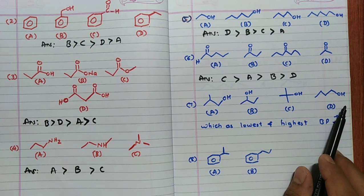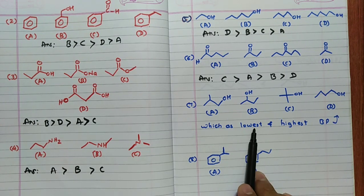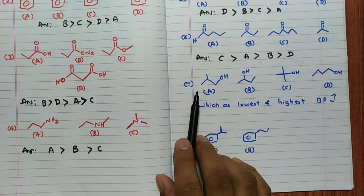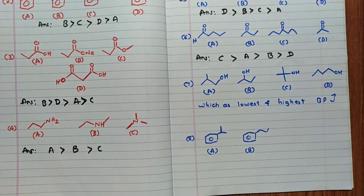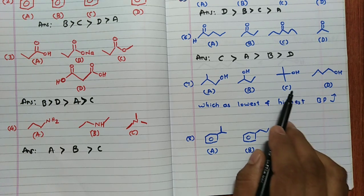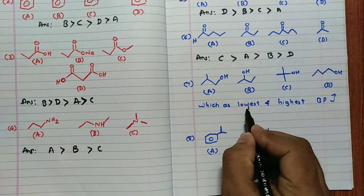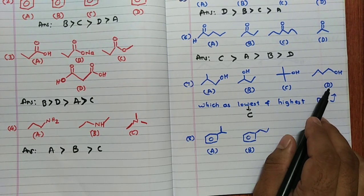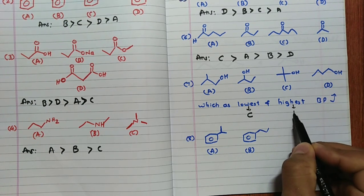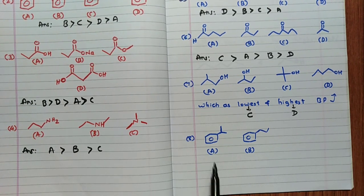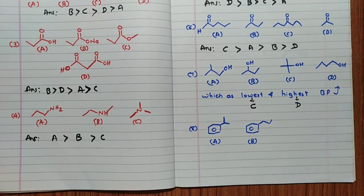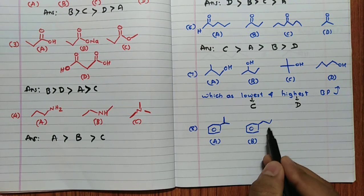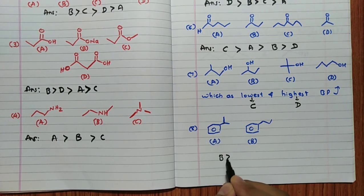Problem 7: Identify the lowest and highest boiling points based on branching. Compound C has the most branching, so it has the lowest boiling point. Compound D has no branching, so it has the highest boiling point. Among A and C, the tertiary structure (C) has lower BP than the primary (A/B); hence B > A for that pair.